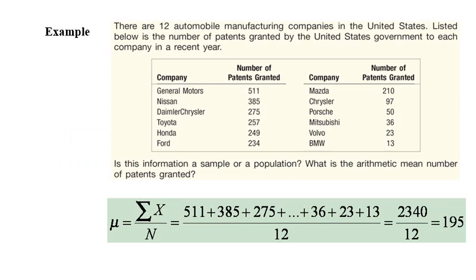This is an example of the population mean where we have 12 automobile manufacturing companies in the United States. We can see that these are all companies working in this industry, so we call this is population. If you find the sum of patents granted for all of them and divide over their number 12, we can find the number will be 195, which means the mean of population here is 195 patents granted for each company.